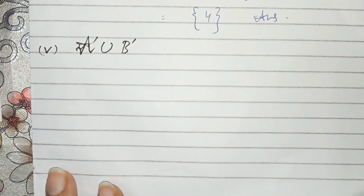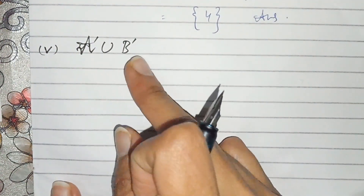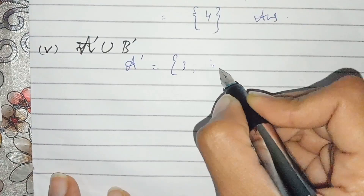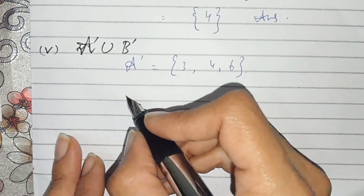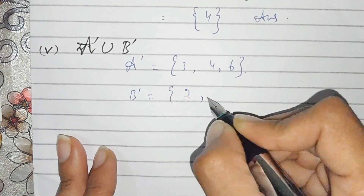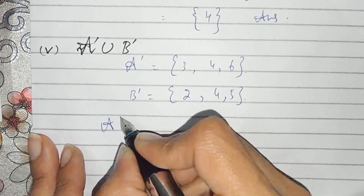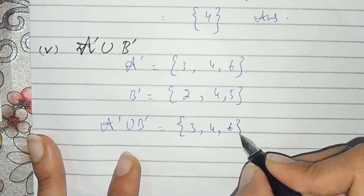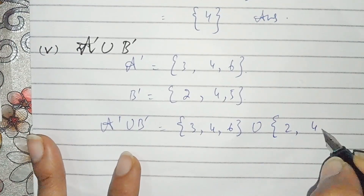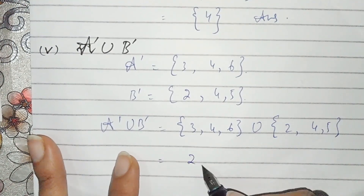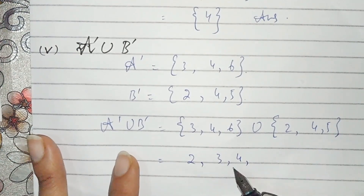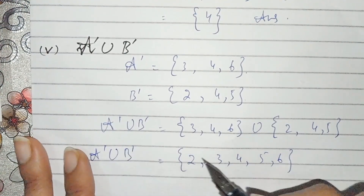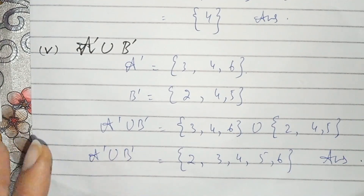Part number five: A complement union B complement. A complement we already found in part one: {3,4,6}. B complement is {2,4,5}. Finding the union: {3,4,6} union {2,4,5} — by combining we get {2,3,4,5,6}. This is A complement union B complement, and the answer to part five.